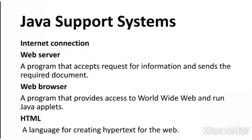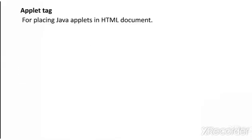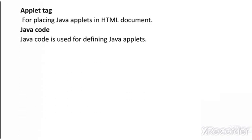An HTML document is required. HTML is a HyperText Markup Language; using this language we create an HTML document within which the Java applet programs are embedded or inserted. An applet tag is used within the HTML document to place Java applet code. Java code is used for defining Java applets.